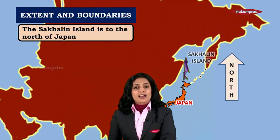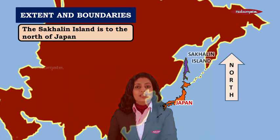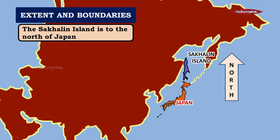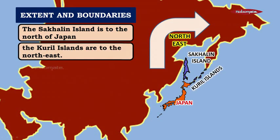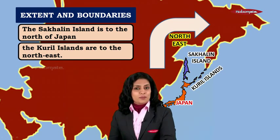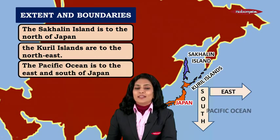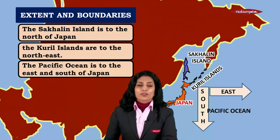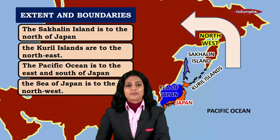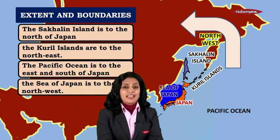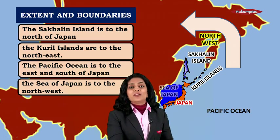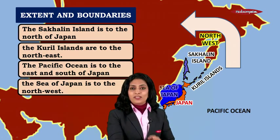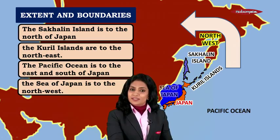The Sakhalin Island is to the north of Japan — can you see that, children? The Kural Islands are to the north east of Japan. The Pacific Ocean is to the east and south of Japan. The Sea of Japan is to the north west. These are the boundaries of Japan.